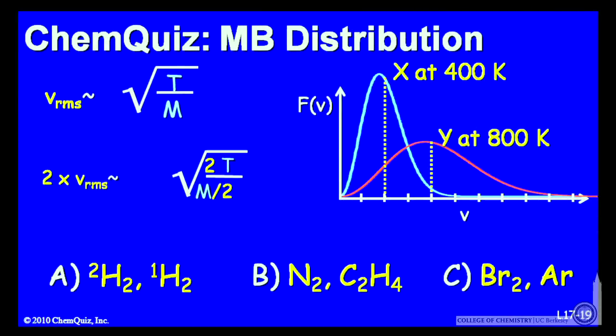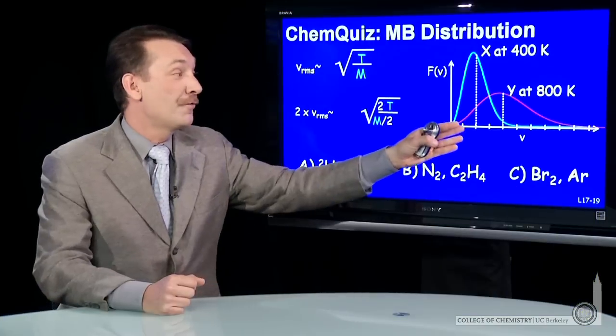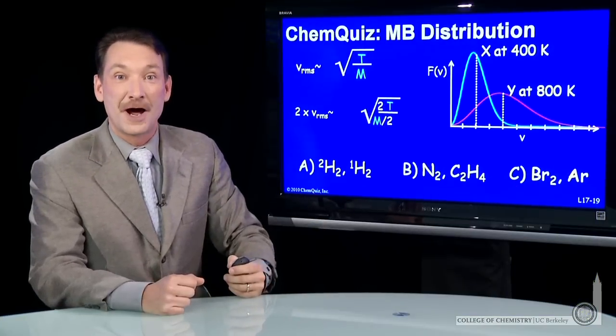Basically, the RMS velocity goes as the square root of temperature. We need a factor of two in the temperature and a factor of two in the mass to get an overall doubling of the RMS velocity.